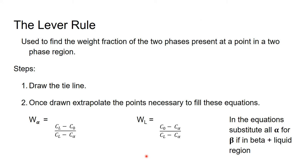The lever rule is used to find the weight fraction of two phases present at a point in a two phase region. There are two steps to the lever rule. The first is to draw the tie line, which we will demonstrate momentarily. And the second is basically just to extrapolate all the points necessary to fill in the equations from the tie line.